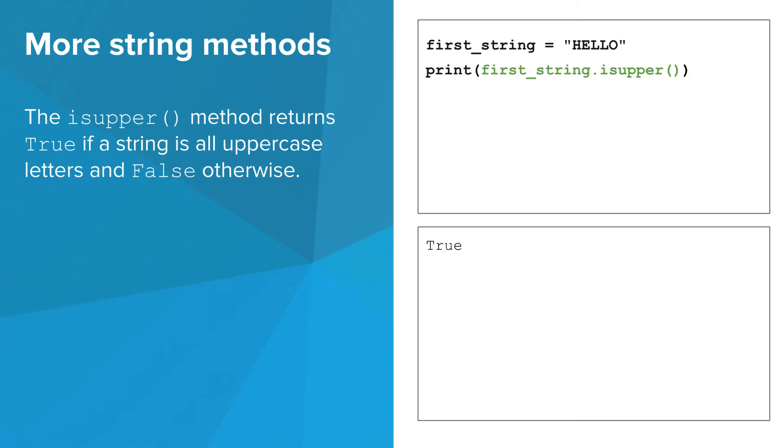The isUpper method returns true if a string is all uppercase letters and false otherwise. So in this case, first_string.isUpper returns true because first_string consists of all uppercase letters. And then there's the isLower method, which returns true if a string is all lowercase letters and false otherwise. So in this case, first_string.isLower returns false.